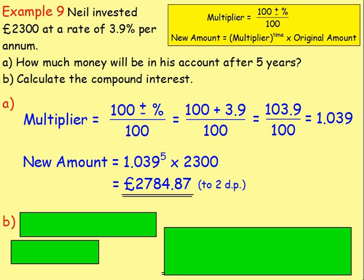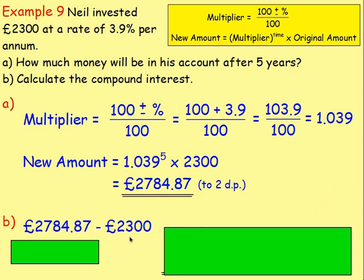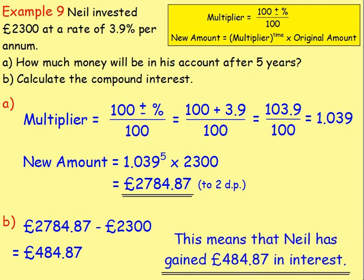Part B, once again, is asking what is the compound interest. So it's not interested in how much money is in the account — it's interested in the free money that Neil has been given for using this specific bank. You take the amount of money that's in the account at the end of five years and take away the initial investment of £2,300. That means in five years, Neil has gained £484.87 in interest.